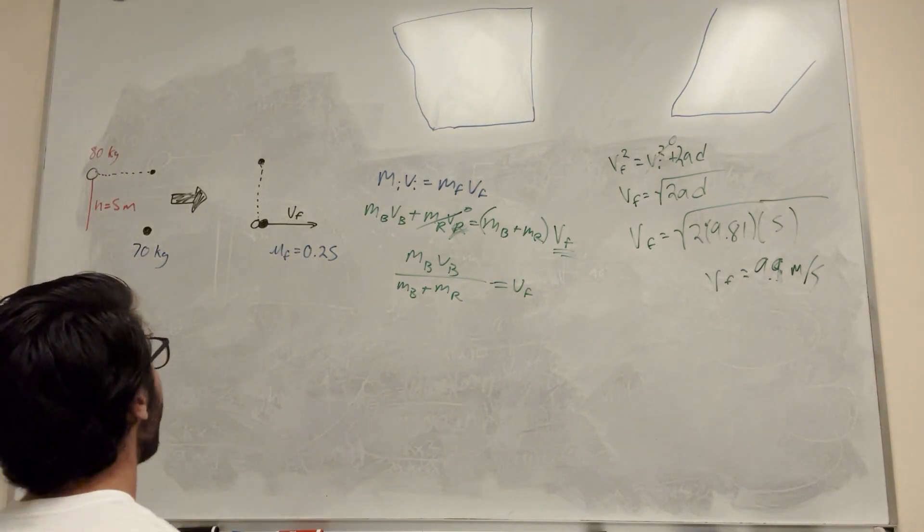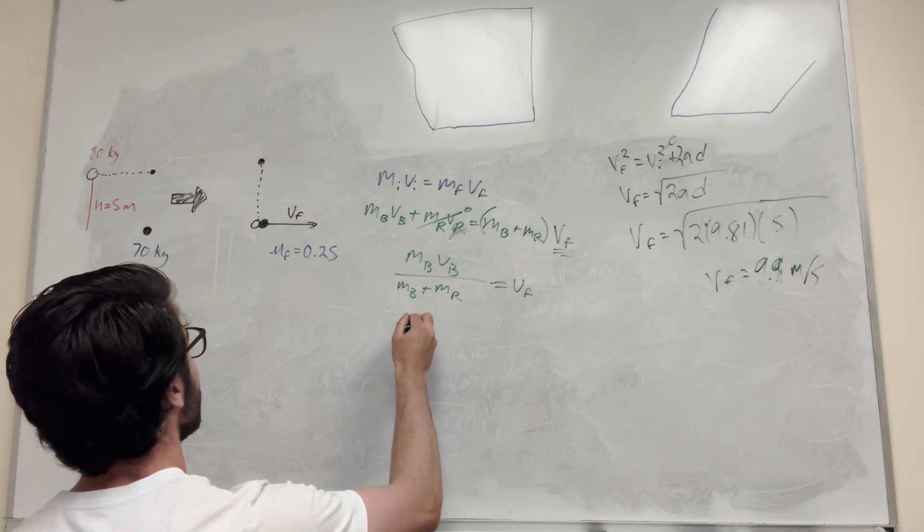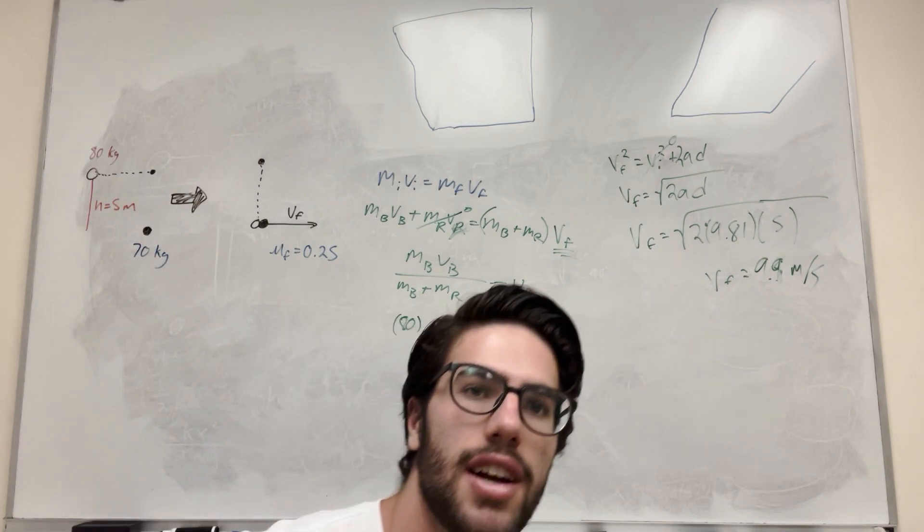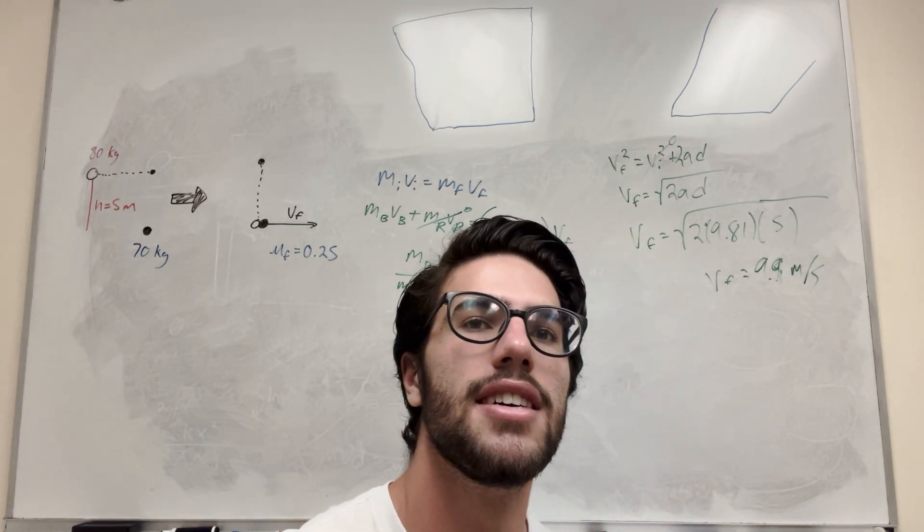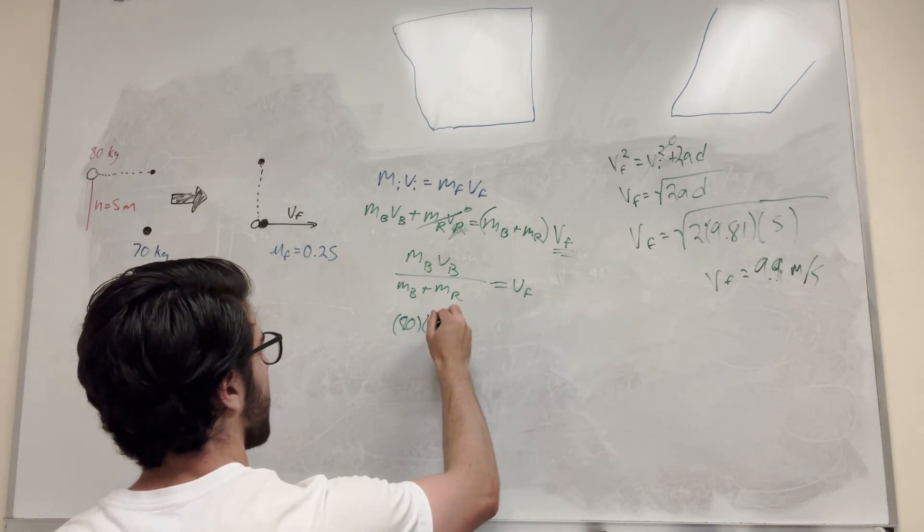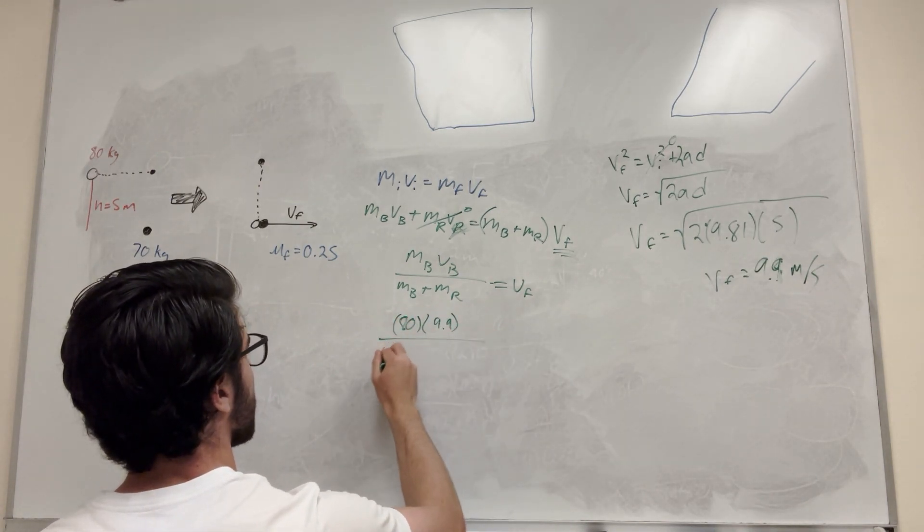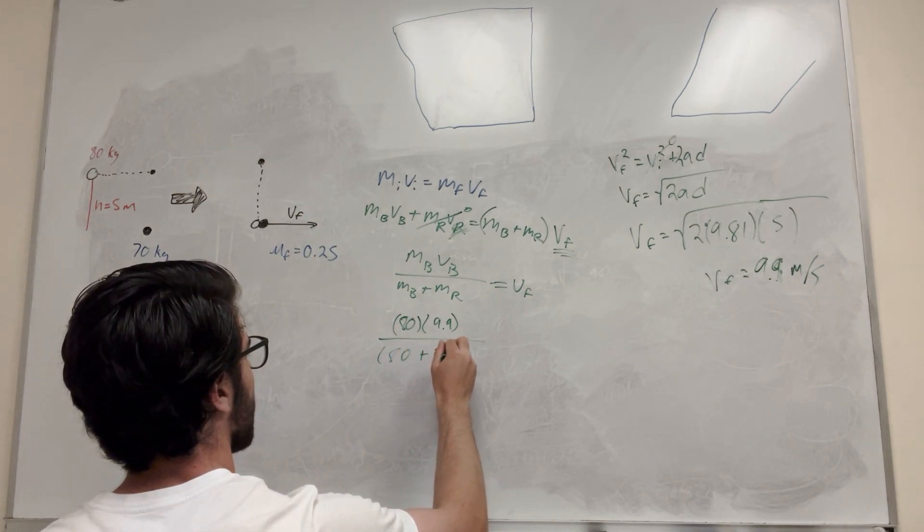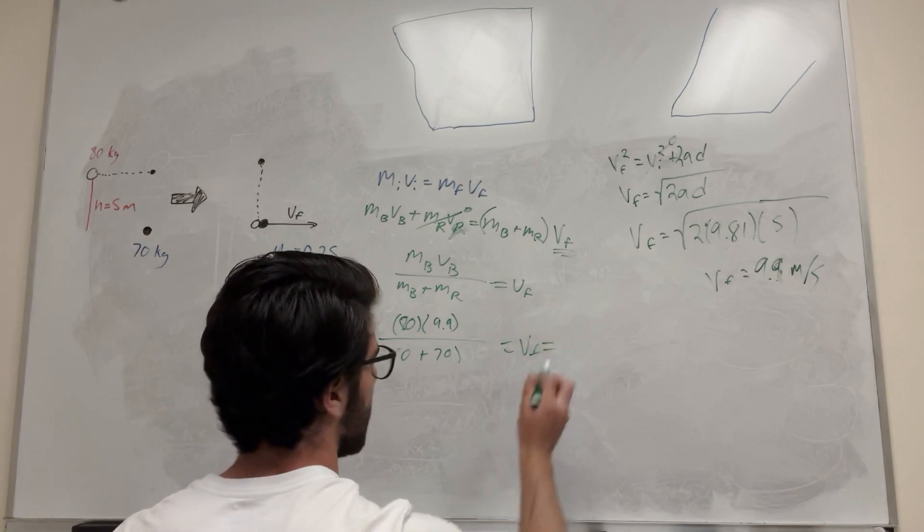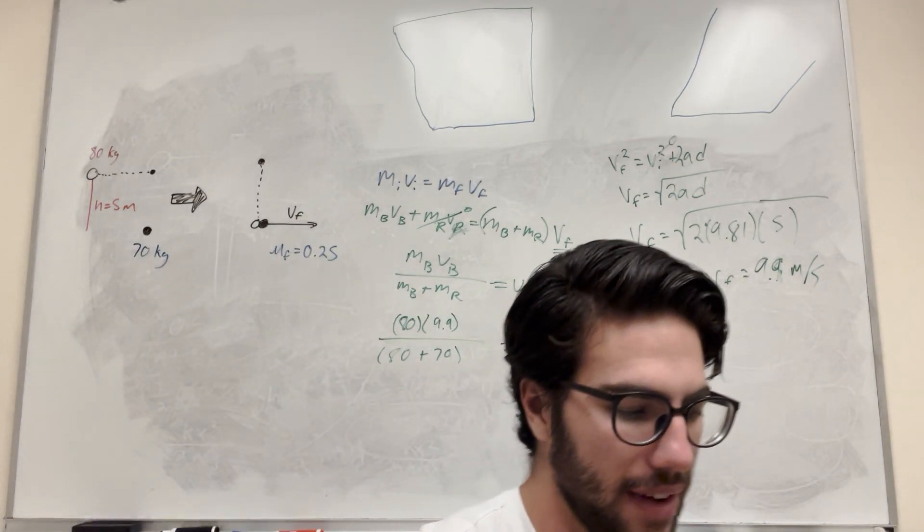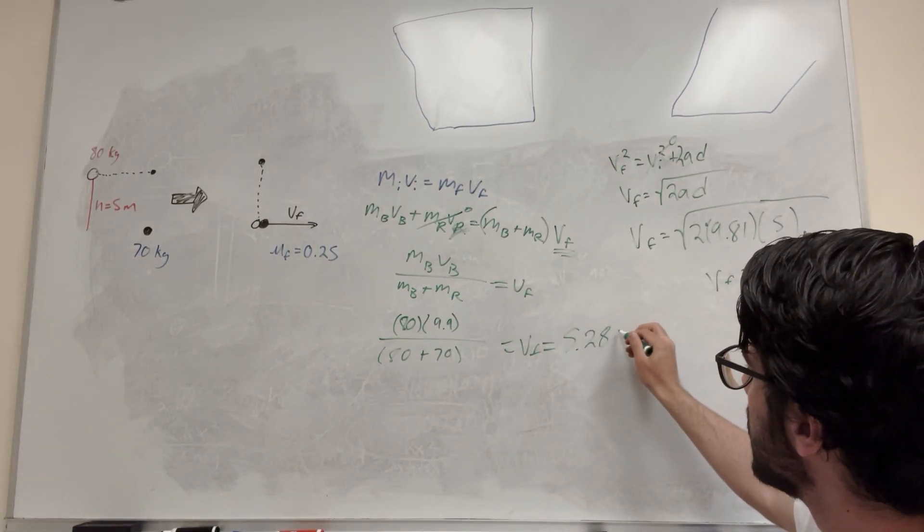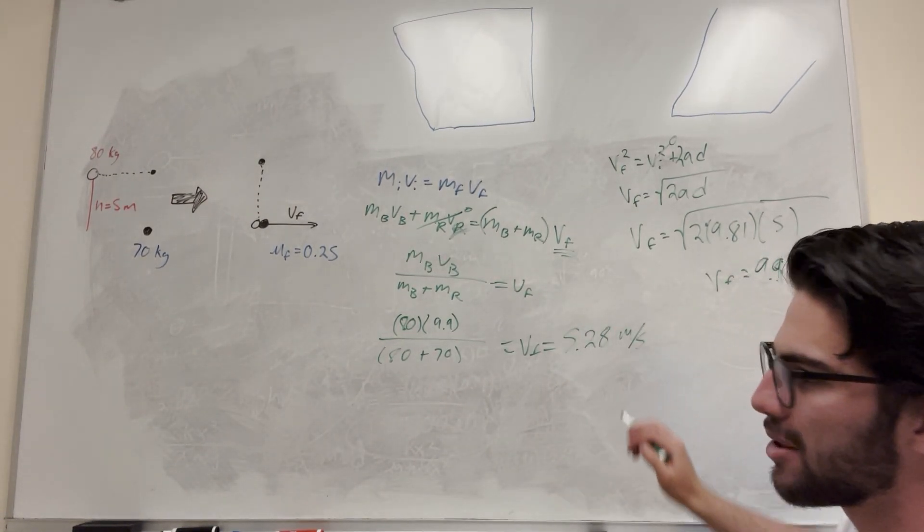So let's plug it in and see what we get. So mass is 80 times, I'm going to make sure I have the right numbers for this. So his velocity is 9.9 at that point. And then it's going to be 80 plus 70 because that's the mass of the bad guy plus the mass of the good guy. So then you plug this in and you get that the actual velocity final after they collide is 5.28 meters per second.